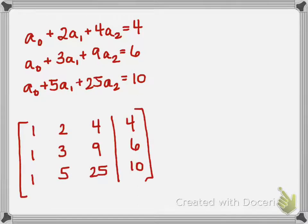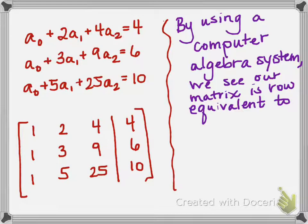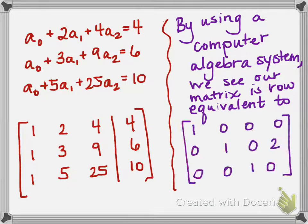I make its associated augmented matrix. And now what I can do is I can use a computer algebra system. By using a computer algebra system like Maple or some graphing calculators have it, you can also use a free online open source mathematics software called Sage. We get a reduced row echelon row equivalent matrix that is the following.